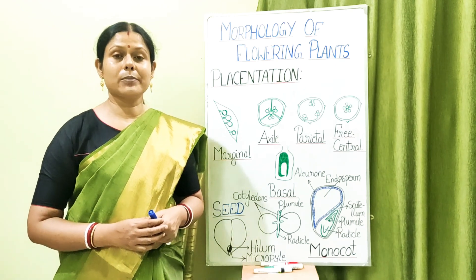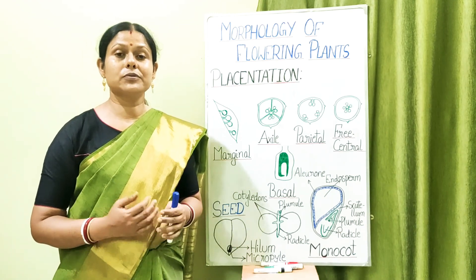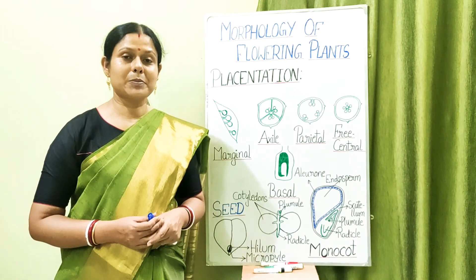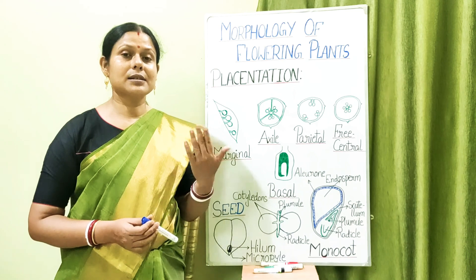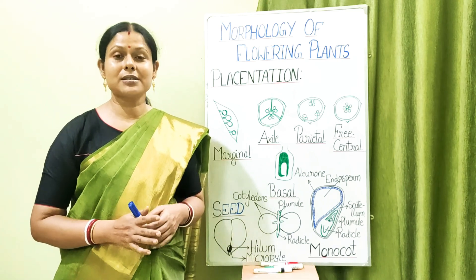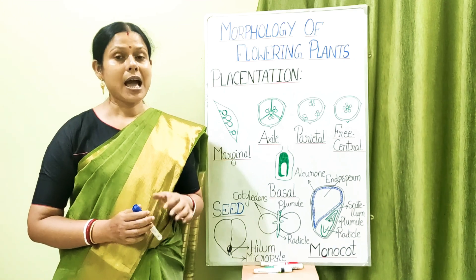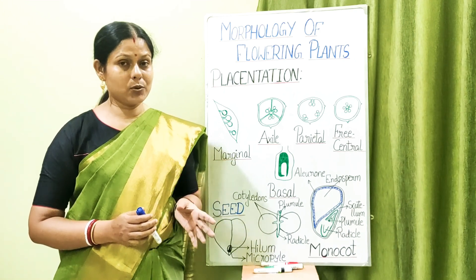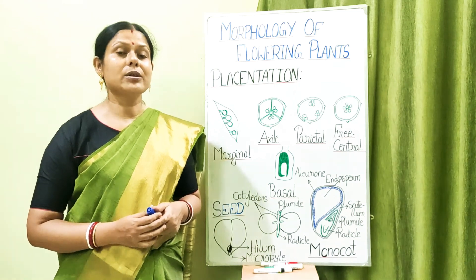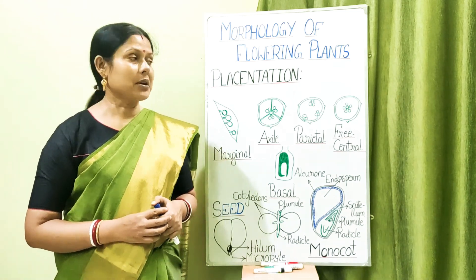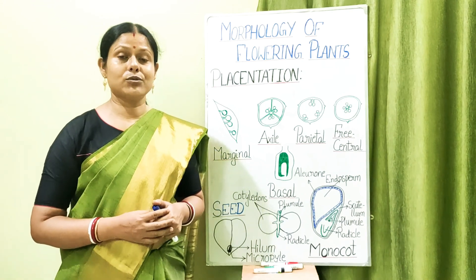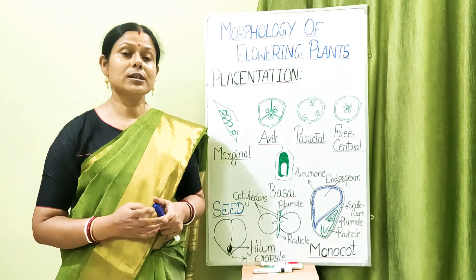As we know, the flower has four whorls. The first two — calyx and corolla — form the non-essential part of the flower, whereas the androecium and gynoecium are considered essential because they take part in sexual reproduction. Flowers which have all four parts are called complete flowers, and those which do not are called incomplete flowers. We also discussed bisexual and unisexual flowers.